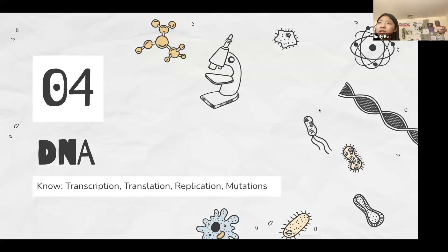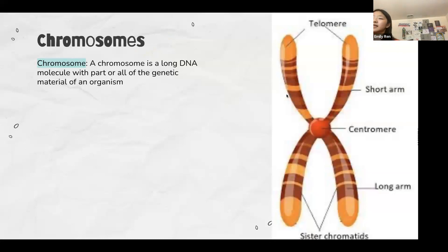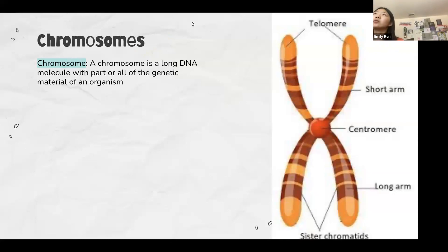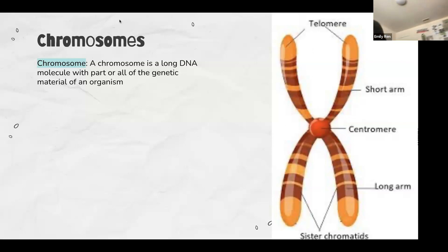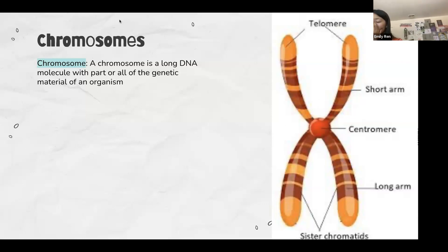Now we're going to go through DNA. I don't have a lot of information for this section on the slides. I'm not going over transcription and translation in depth, but there are good videos on YouTube. This is the basic structure of a chromosome, as seen in karyotype charts. I do have notes on transcription and translation if you'd like to see them — I'll send them during the break, though this is usually not heavily tested in bioprocess lab.